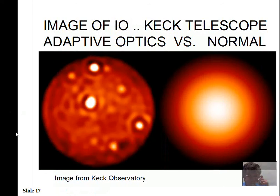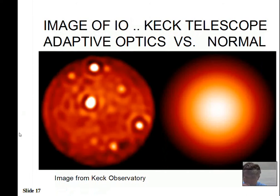The Earth's atmosphere creates another problem beyond blocking certain wavelengths — it makes stars twinkle. As light passes through the atmosphere, it's not perfectly smooth or uniform in density. Little pockets of higher or lower density air act like lenses, bending the light path and shifting it around in rapid motion. This can be corrected with adaptive optics on the ground — a small mirror in the light path is rapidly bent by computer-controlled motors to compensate for the twinkling effect.